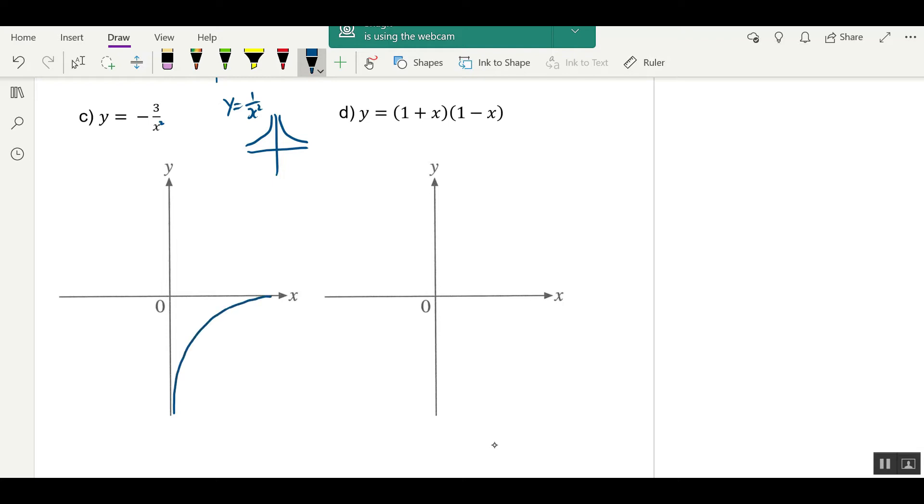Now, this is too close such that it touched, so you cannot. Redo. Start very close to the axis and end very close to the axis. But you cannot touch the axis. Start very close to the axis and then end very close to the axis. And try for it to be as symmetrical as possible.